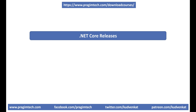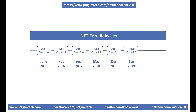The first version of .NET Core, that is .NET Core 1.0, was released in June 2016. Since then, many minor and major versions of .NET Core were released. .NET Core 3.1 is the last release of .NET Core.